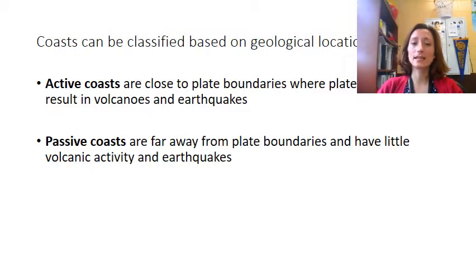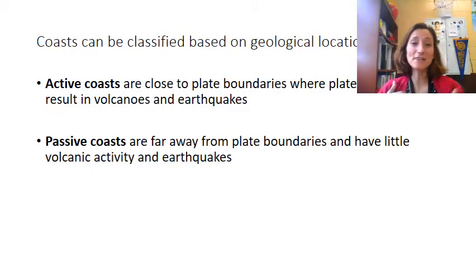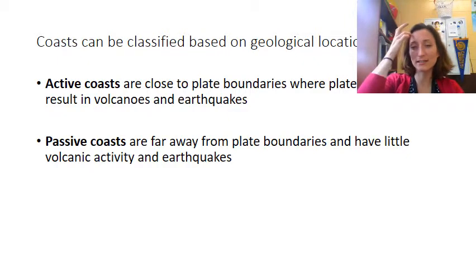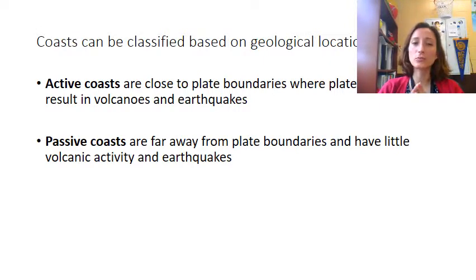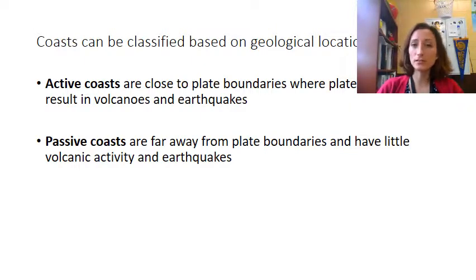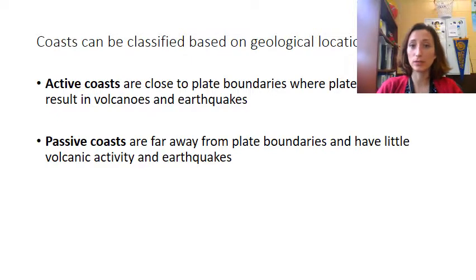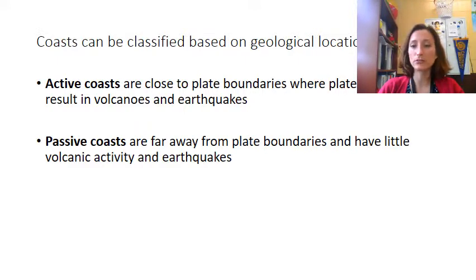Coasts can be classified based on their specific geological location. Active coasts are close to plate boundaries — where plate collisions result in either volcanoes, earthquakes, or sometimes even tsunamis. Passive coasts are simply farther away, closer to the middle of the continental plate, with very little impact from volcanic activity, earthquakes, and tsunamis because they're much further away from a boundary. It's just proximity to where those plates meet up.